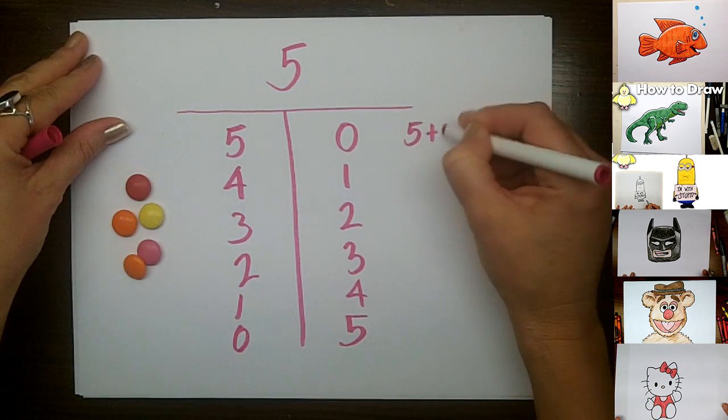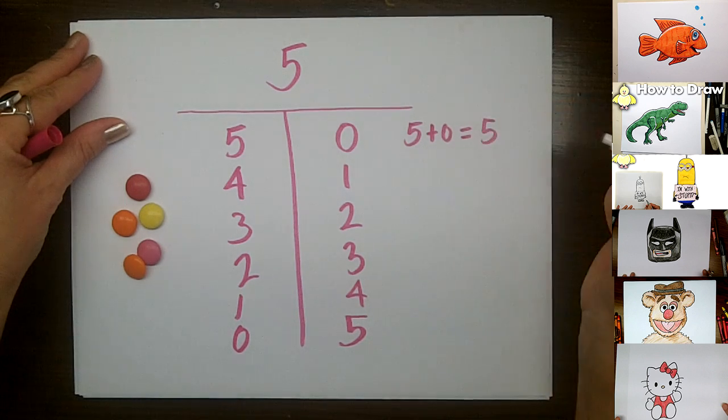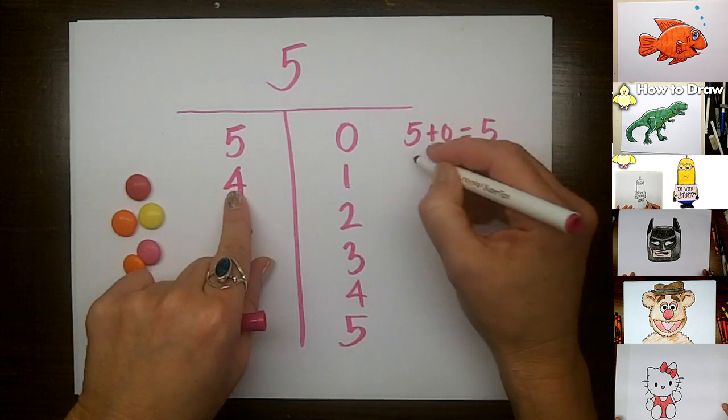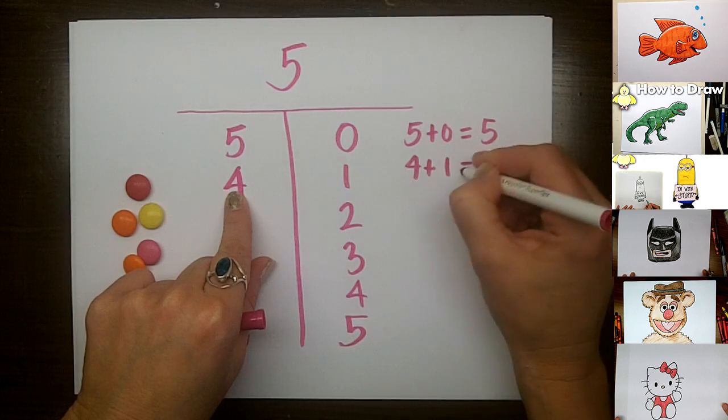You could have 5 plus 0 equals 5. You could have 4 plus 1 equals 5.